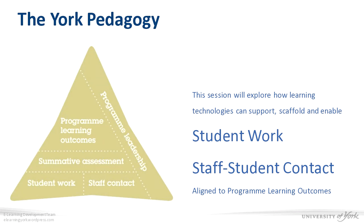Someone takes ownership of the program and the direction for it, and they are responsible for ensuring that the program is developed in a way that meets program learning outcomes. These six to eight program learning outcomes are distinctive about that program — they identify what graduates will achieve as a result of undertaking a particular degree. Graduate attributes are often another way of looking at program learning outcomes.